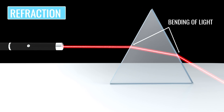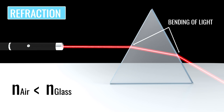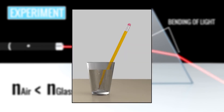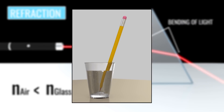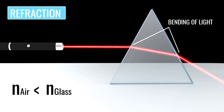Refraction occurs when light passes from a medium with one refractive index to one with another refractive index. The light bends towards the interface when it goes from a medium of high to one of low refractive indices. Refraction is the reason why a pencil looks bent in a glass of water. This simple refraction technique is effectively used in optical fibers.